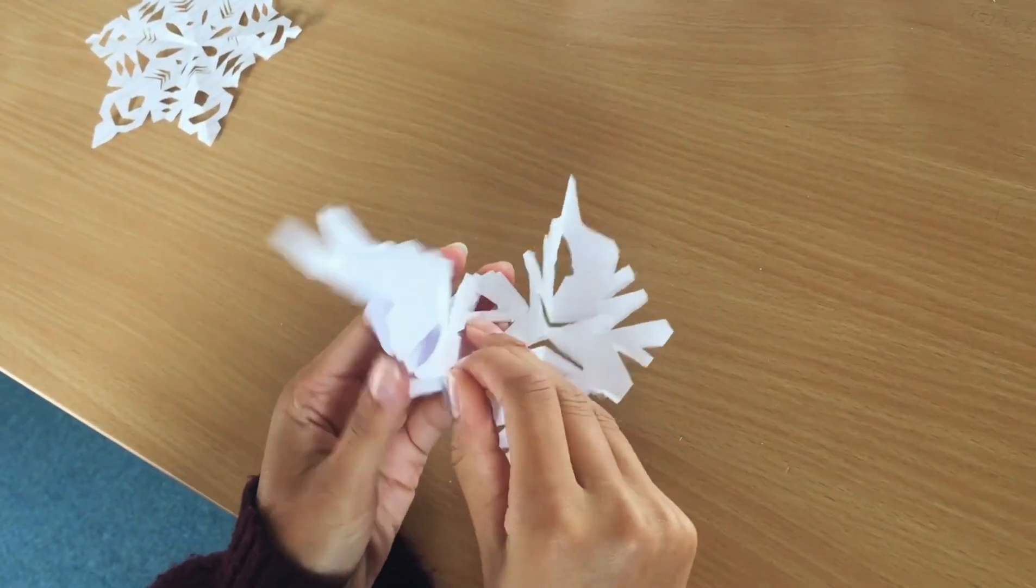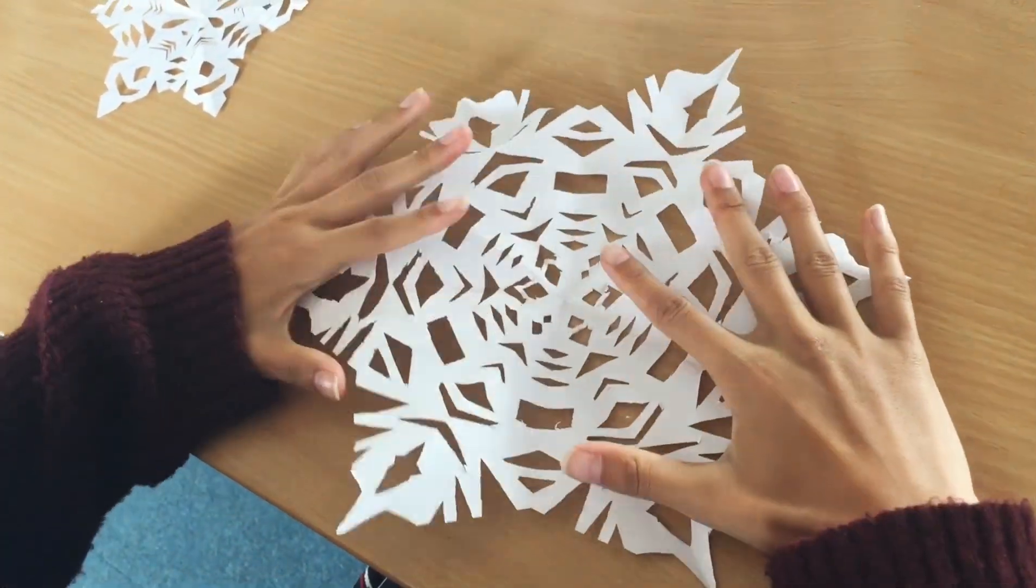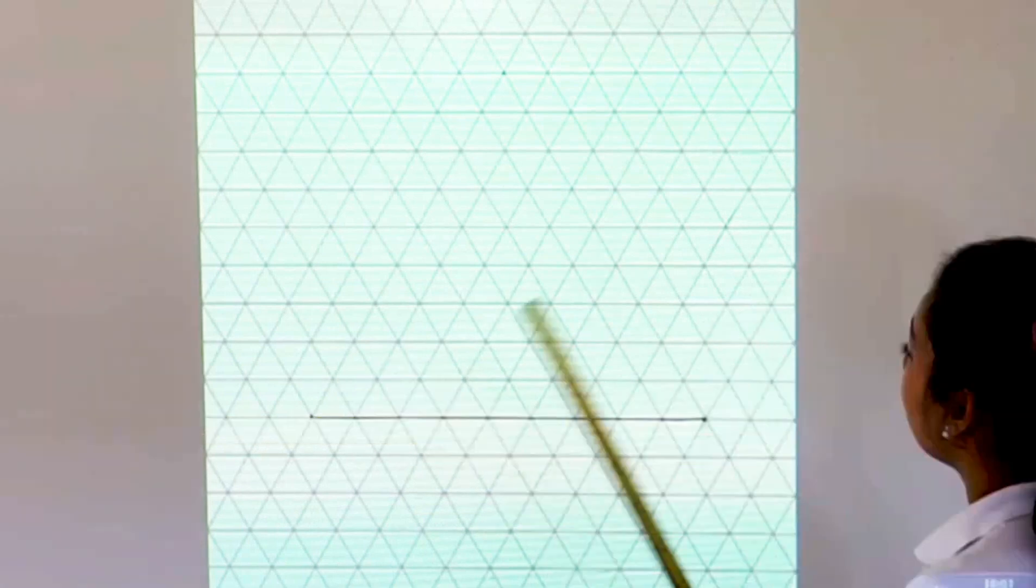Snowflakes are found in the natural world. We first learnt about this using reflection and rotational symmetry by cutting out snowflakes. We have now investigated this further.